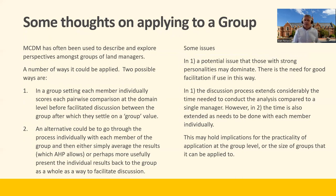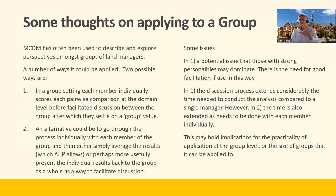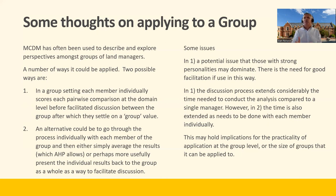One strength of this approach is that you can apply MCDM to a group, and it's often been used to do this. Two possible ways: in a group setting or workshop, you could get each member to individually score each pairwise comparison at the domain level — finance against environment, etc. — before facilitating discussion between the group, at which time they settle on an average figure. Alternatively, you could do the process individually with each person and then aggregate their scores.